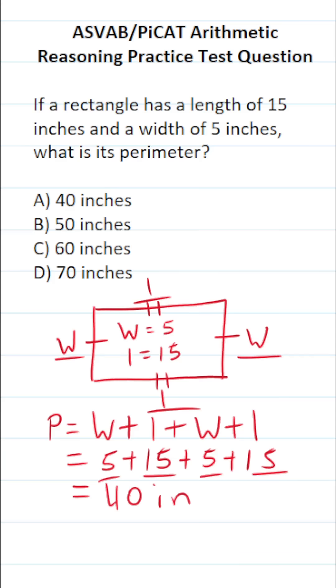So the perimeter of this rectangle is going to be 40 inches. Again, you don't get a reference sheet on this test, so you have to commit these formulas to memory. Beyond that, you have to understand how to use the formulas accordingly. Thank you, and we'll see you next time.